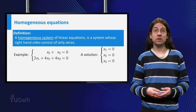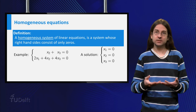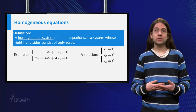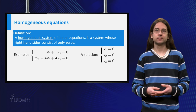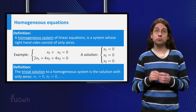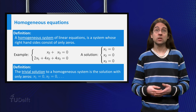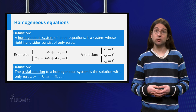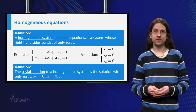Notice that the homogeneous equation has a solution x1 equals 0, x2 equals 0, etc. Or in terms of a matrix equation this solution is x equals the zero vector. As you always have this solution it is called the trivial solution. So the set of solutions of a homogeneous equation will always contain the trivial solution. Geometrically this means it contains the origin.